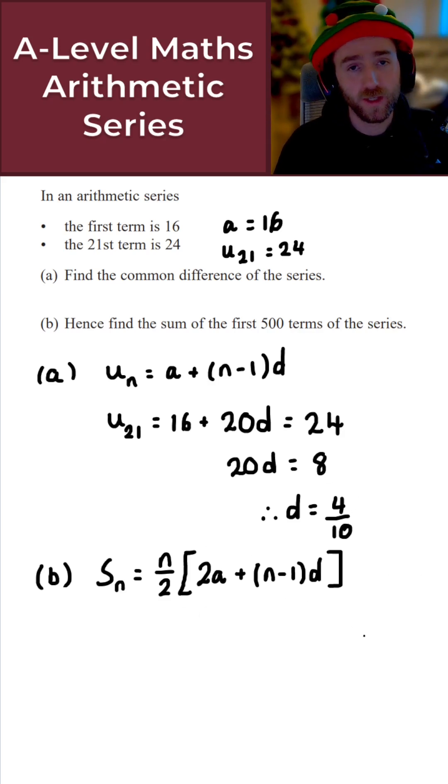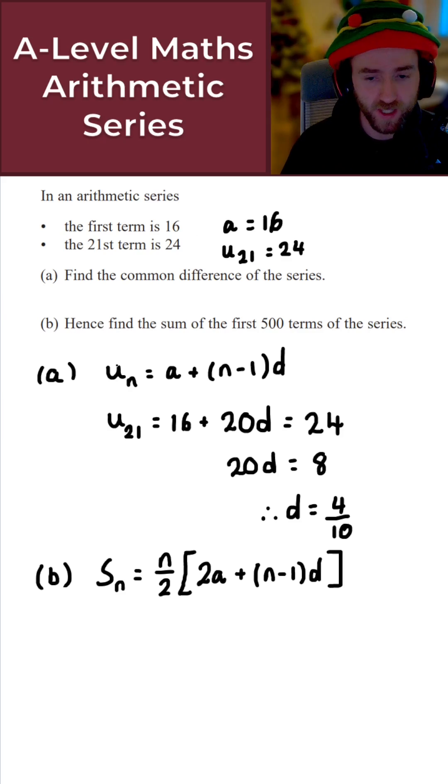We know what a is, we know what d is, and we also know what n is as well. Putting that all together, we can find the sum of the first 500 terms of this arithmetic series.